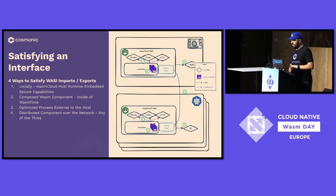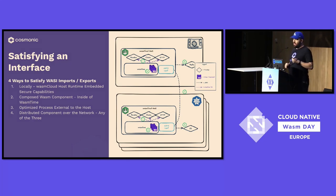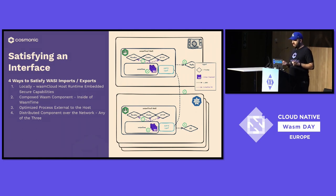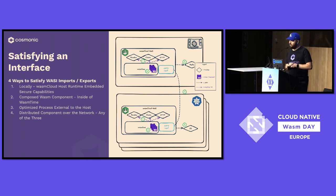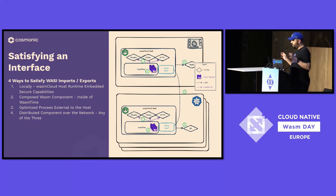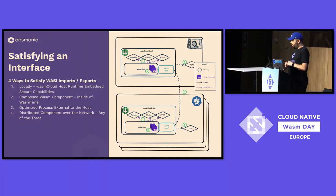So how do you satisfy an interface? There are four ways to satisfy an import or export inside WIT files: locally — we do that in WasmCloud with things embedded in the runtime; a composed component; an optimized process external to the host; and a distributed component that can do any of those three. WasmCloud is a CNCF project that should be incubating relatively soon — it's a distributed system for running WebAssembly, so we can do this in a distributed or local way.